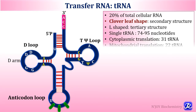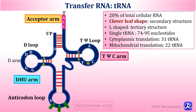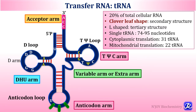Mature transfer RNA constitutes 20% of total cellular RNA. Its secondary structure is cloverleaf-shaped and tertiary structure is L-shaped, and it is 74 to 95 nucleotides long. The cytoplasmic translational system possesses 31 transfer RNAs while the mitochondrial translational system possesses 22. Transfer RNA has five arms: the acceptor arm, DHU arm, TψC arm, anticodon arm, and the extra or variable arm.